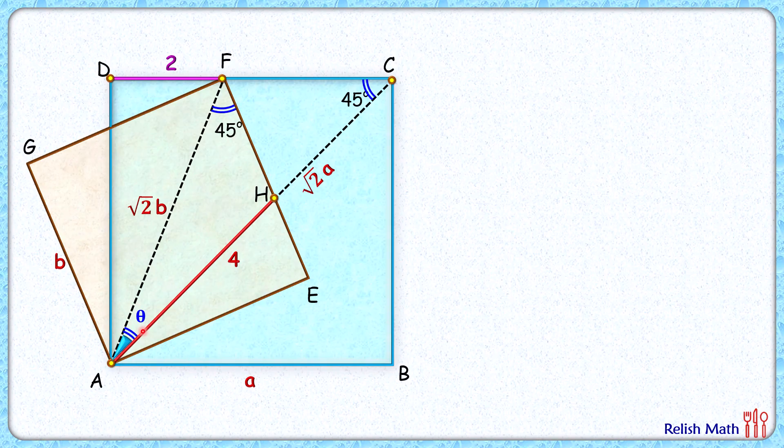Now in this yellow triangle and this orange triangle, both triangles have angles as 45 and theta, 45 and theta. And thus, by angle-angle similarity, this yellow triangle is similar to this orange triangle.